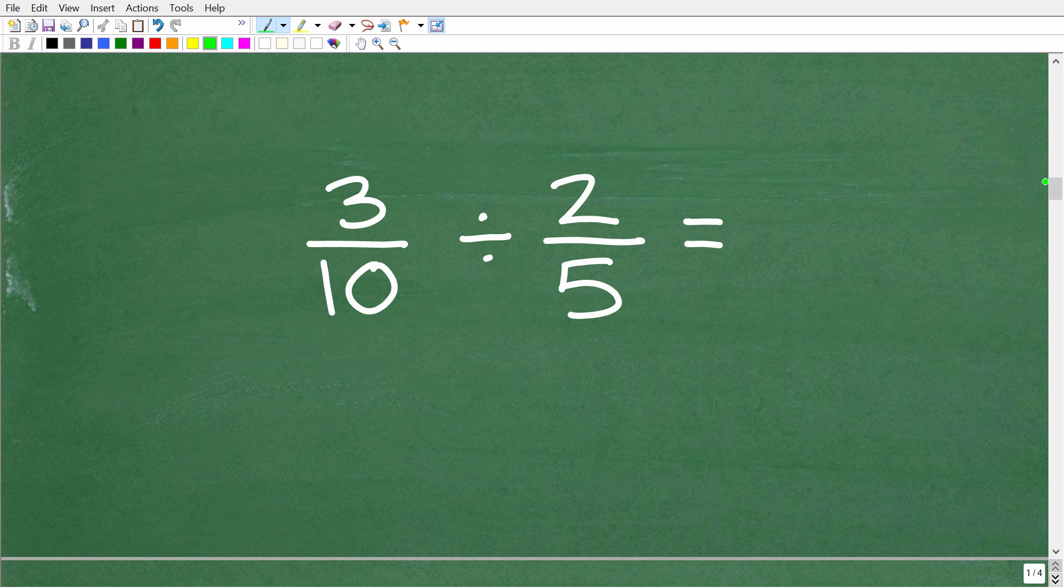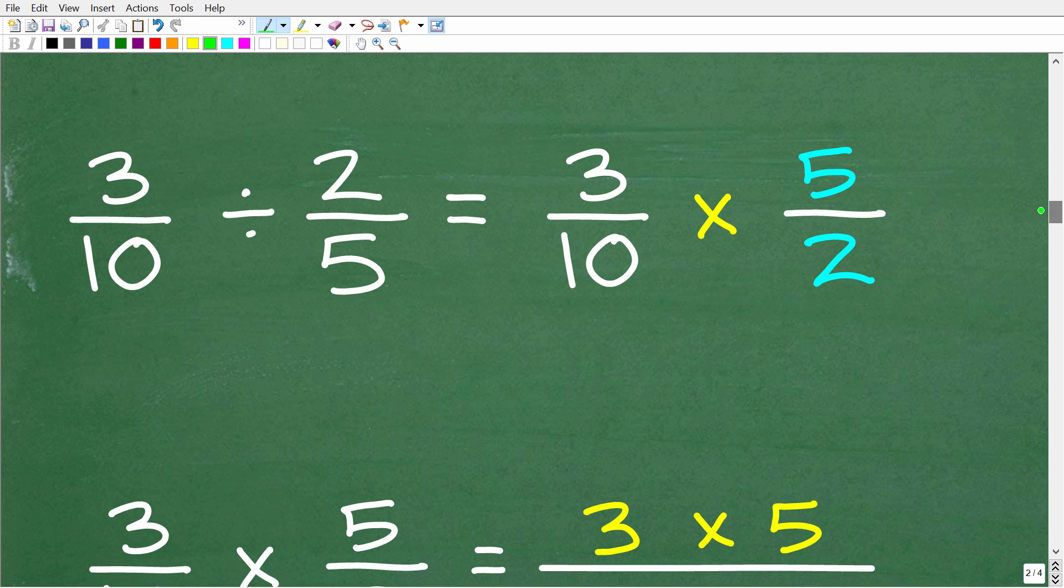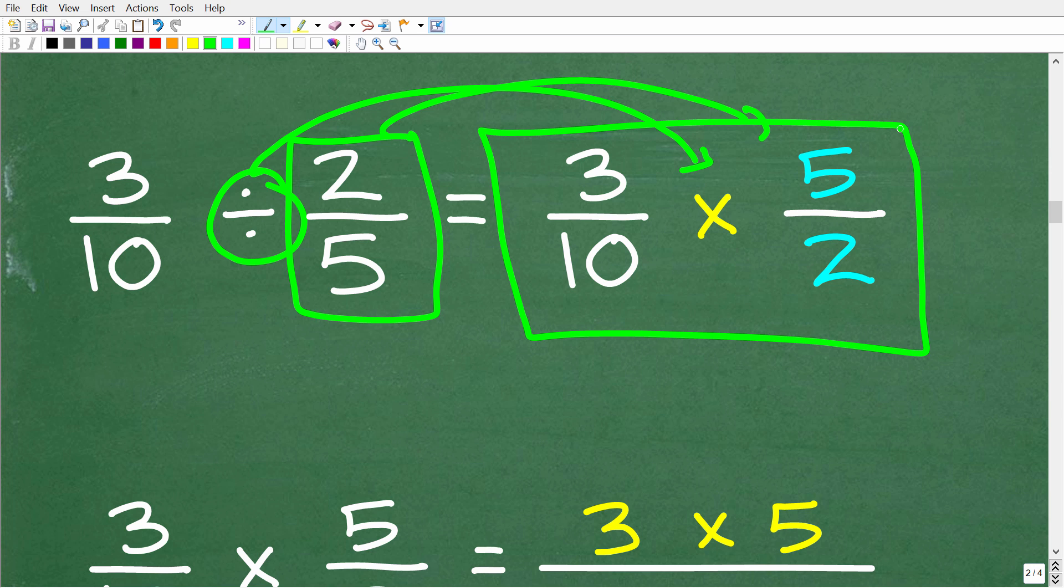Here again is our problem: we have 3/10 divided by 2/5. To divide fractions, what we need to do is change this problem from division to multiplication. The way we do that is to flip the fraction to the right of the division operator. We're going to flip this upside down and turn this into a multiplication problem. This should be review because you have a lot of fractions in algebra. If you don't know how to work with fractions and decimals, you're going to have a tough time in algebra.